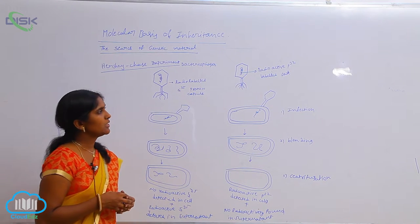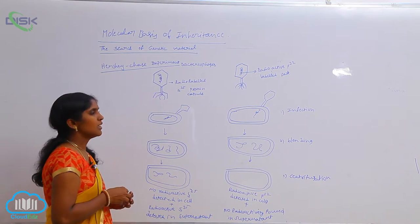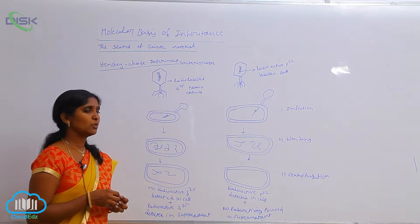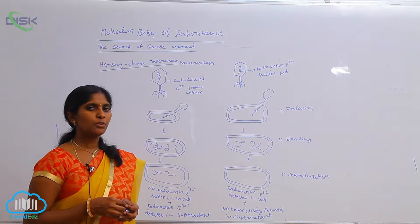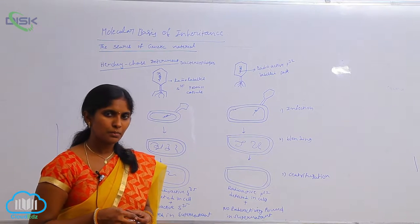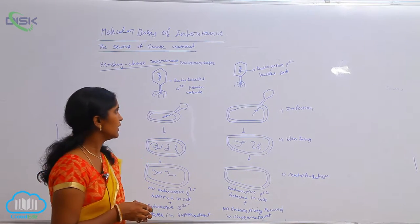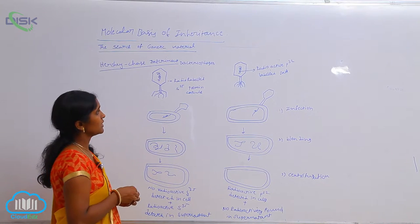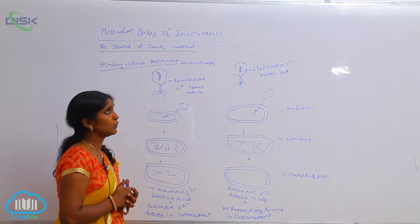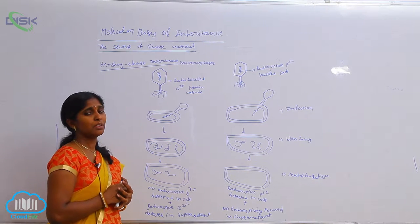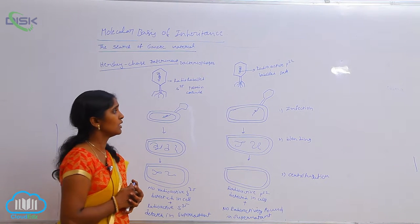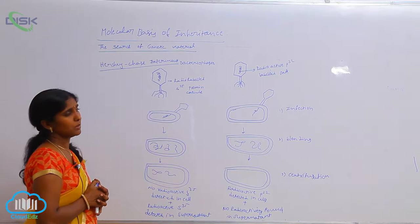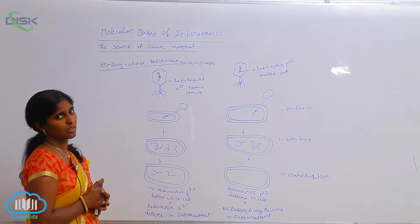To find the actual genetic material, Hershey and Chase conducted the experiment on the T2 bacteriophages. Bacteriophages means viruses which cause bacteria digestion — bacteria killing agents. They are bacteria killing viruses. By using the bacteriophages, they conducted the experiment. This experiment is also called the blender experiment. In the Hershey-Chase experiment, T2 bacteriophages are used.